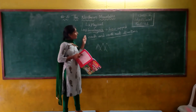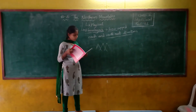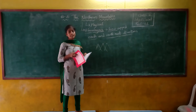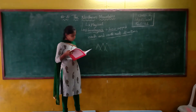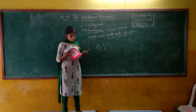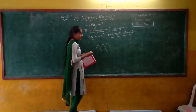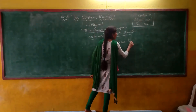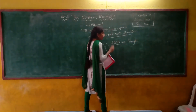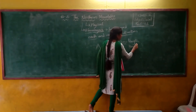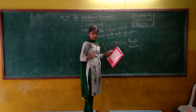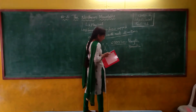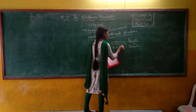The Himalayas also extend towards Kashmir. Where is Kashmir, children? If you look at India, it is towards the top western part of India. The Himalayas stretch 2,500 kilometers lengthwise. According to the breadth, they are 150 to 400 kilometers wide.